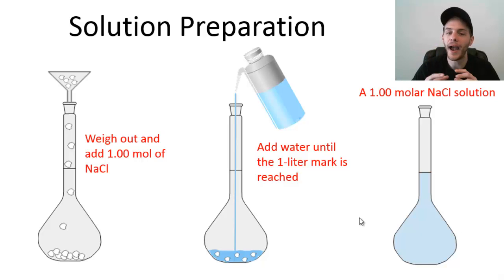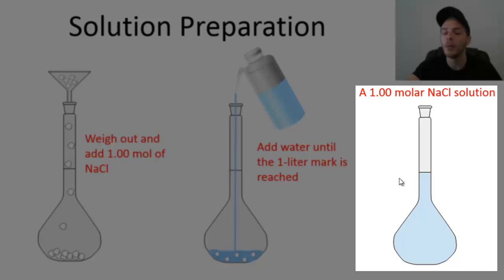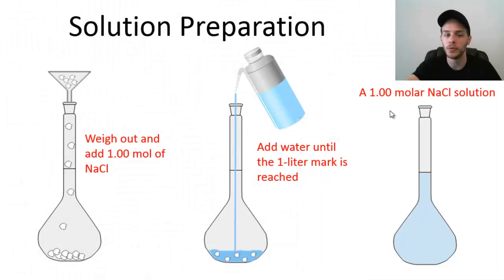So instead, we're adding the solute to the flask, and then we are diluting it to the mark with solvent. Once we have added enough water to reach the one liter mark of this volumetric flask, then we would shake the flask up, mix the solute in that solvent, make sure it's thoroughly mixed, and that would result in a solution that has a molarity of one. We would call this a 1.00 molar sodium chloride solution.